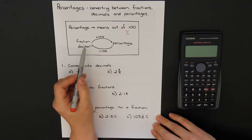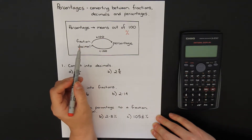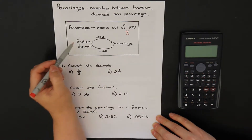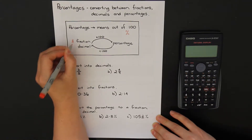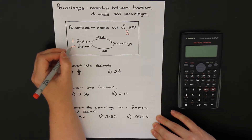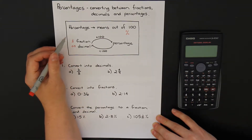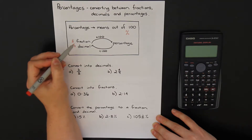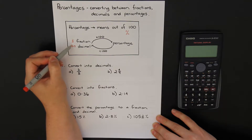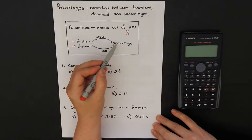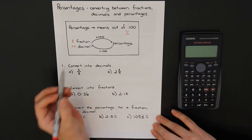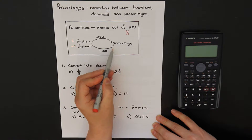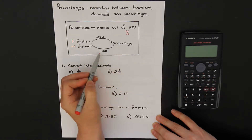I've drawn a little diagram here to help you know how to convert between fractions, decimals and percentages. Fractions and decimals are actually different forms of writing the same thing — a fraction of a half is the same as a decimal of 0.5. To convert from either of those to a percentage, you times by 100. If you want to go from a percentage back to a fraction or a decimal, you divide by 100.